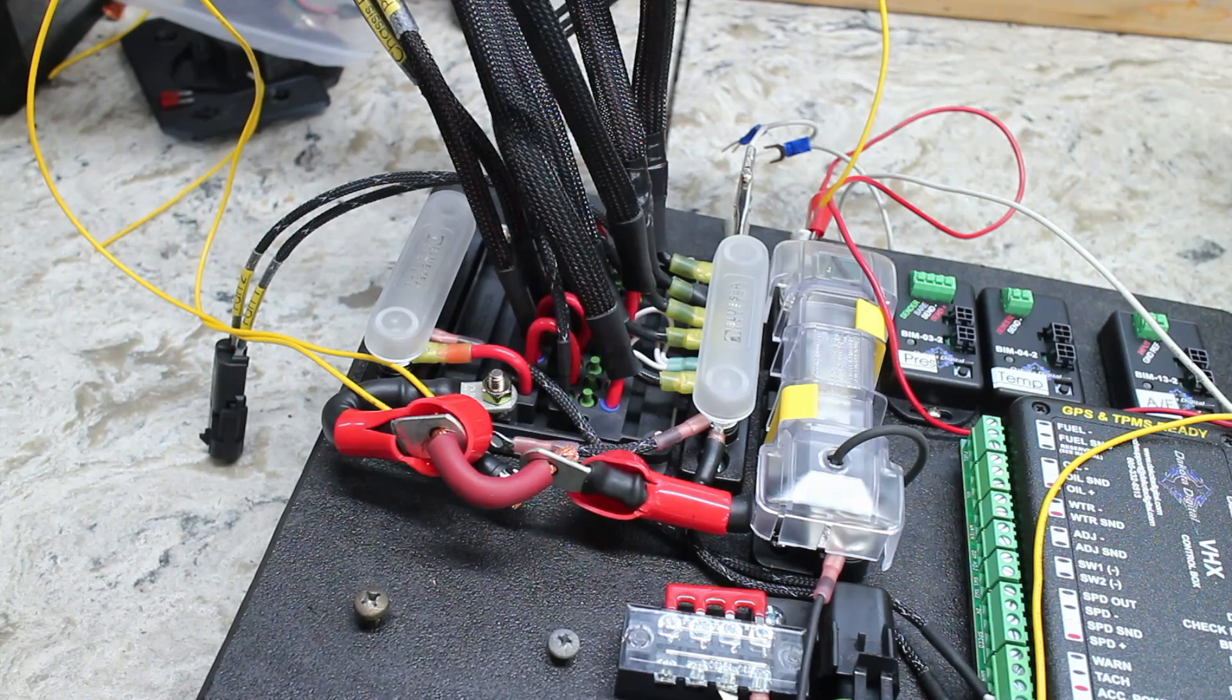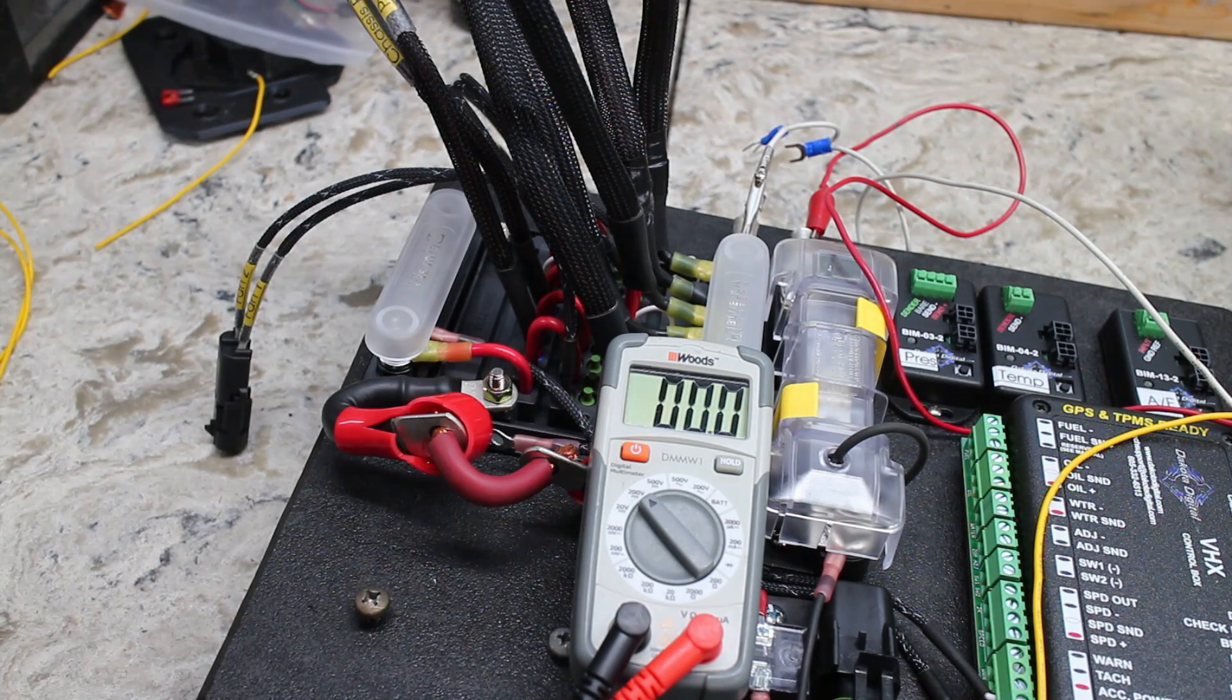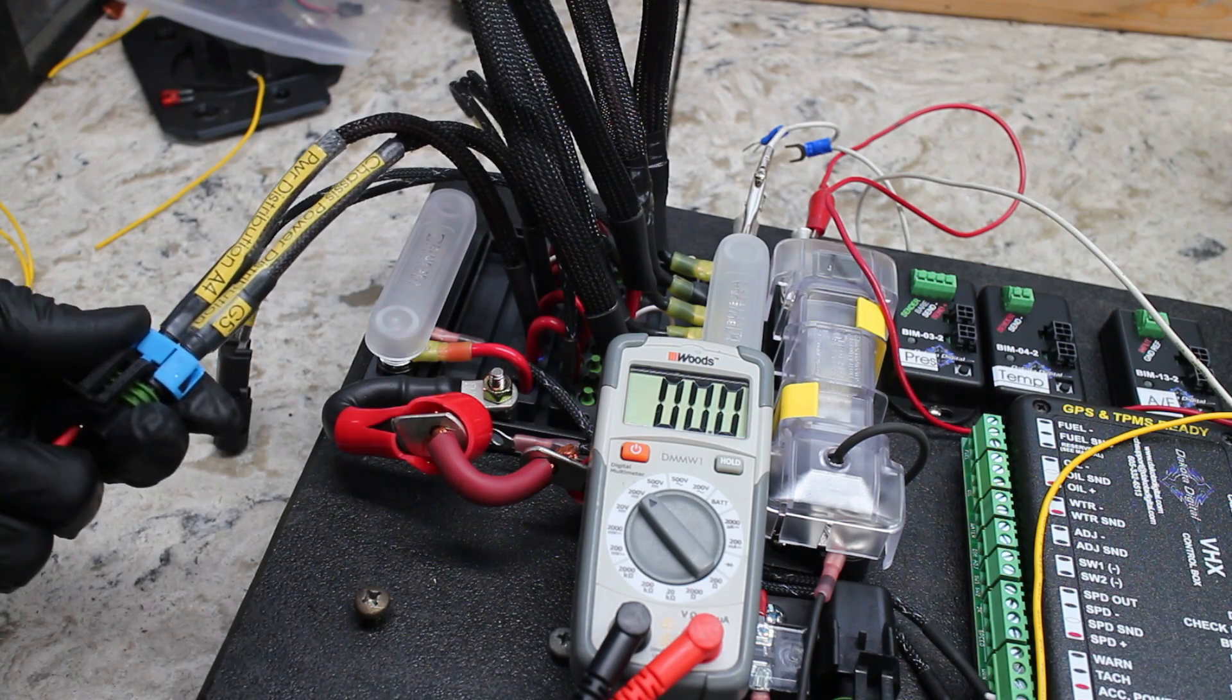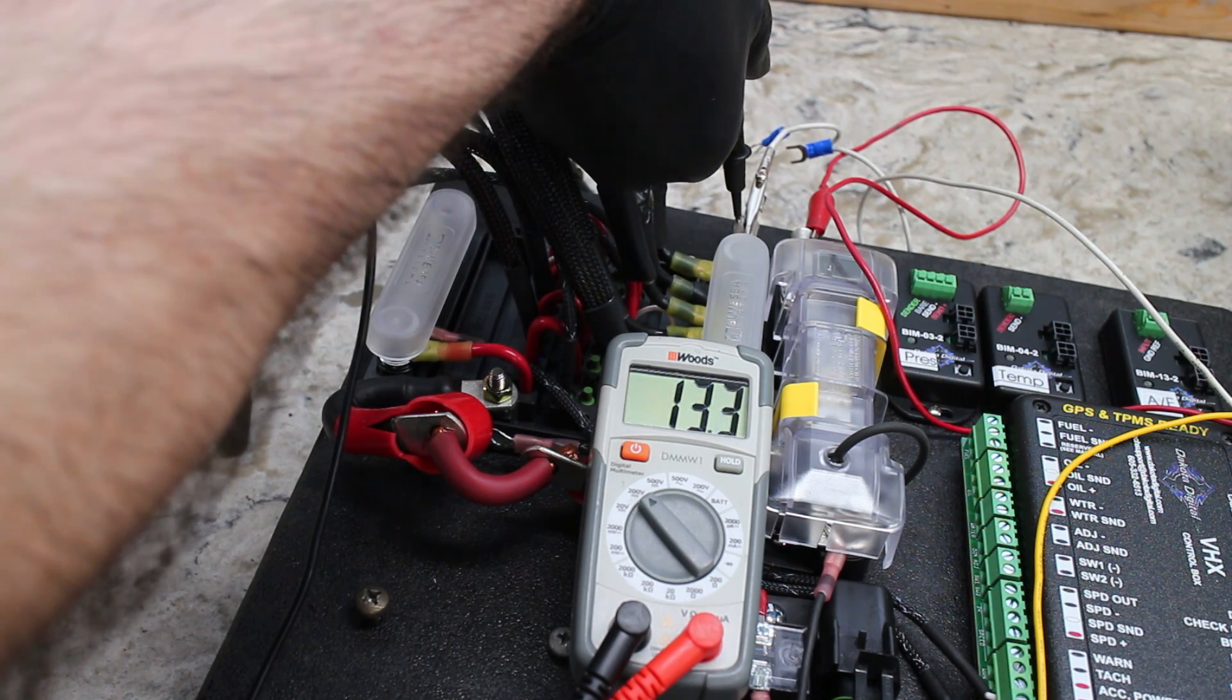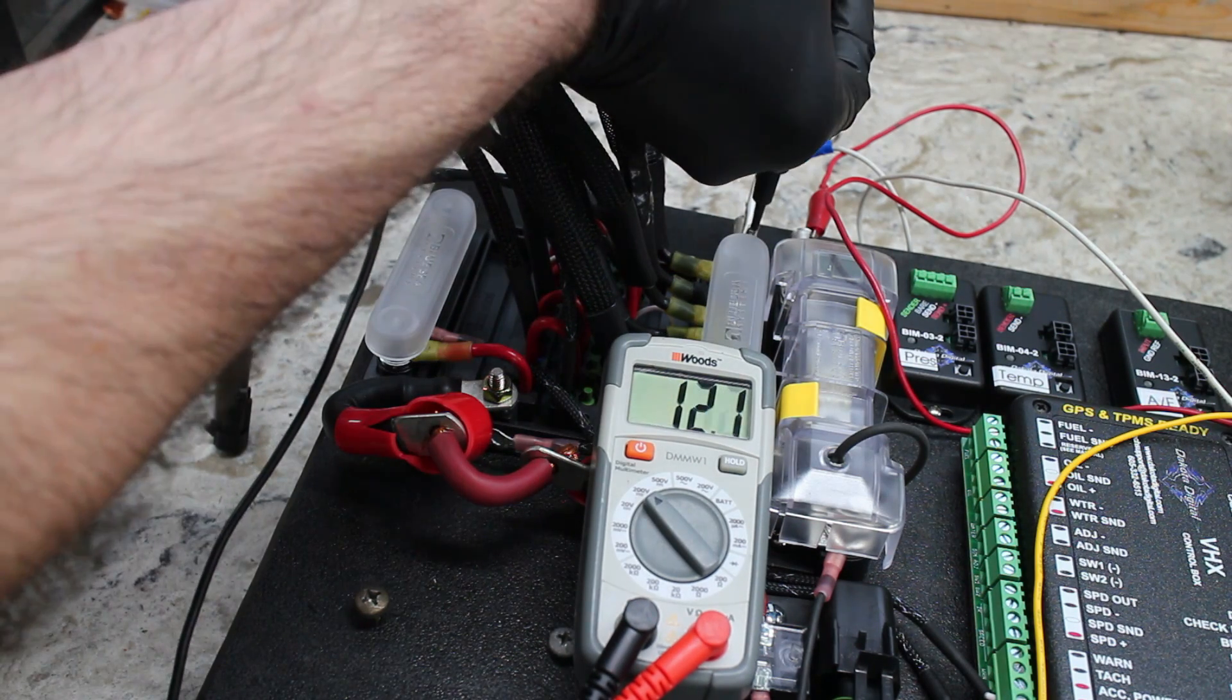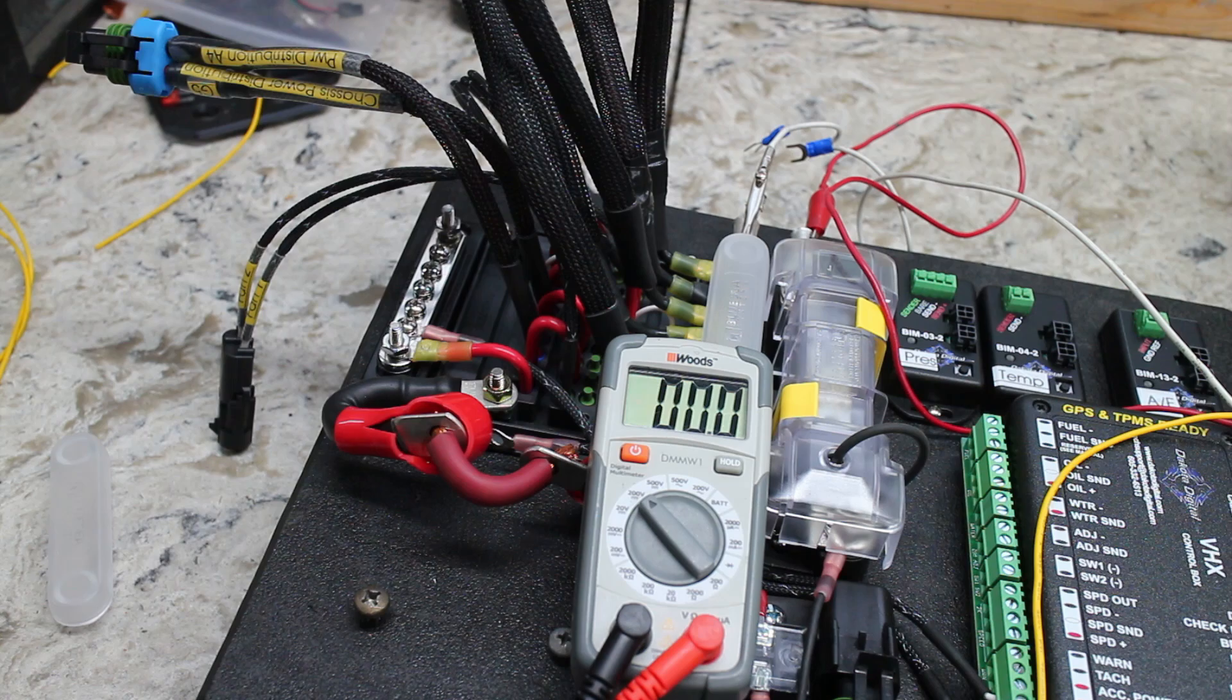Next, I tested the main chassis power wires to see if they were working correctly. Both have the correct voltage, so that's a win. Then this positive bus bar gets tested, and it's showing up with the right voltage.